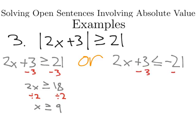On the right, I can subtract 3 from both sides as well, and it leaves me with 2x is less than or equal to negative 24. Now I can divide both sides by 2. 2 is positive, so it's not that hard. Less than or equal to, negative 24 divided by 2 is negative 12.